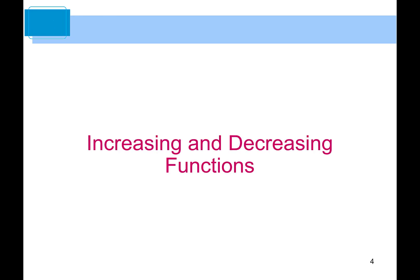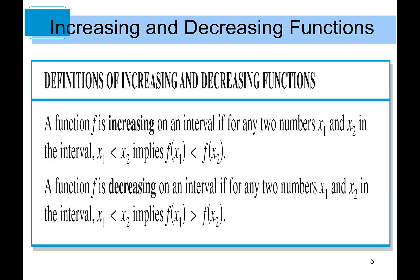First, let's take a look at the definition of increasing and decreasing functions. A function f is increasing on an interval if for any two numbers x1 and x2, if x1 is less than x2 — meaning x1 is on the left-hand side of x2 — then it is guaranteed that f(x1) is less than f(x2). That means the y-value at x = x1 is smaller than the y-value at x = x2, which means it's increasing on the interval.